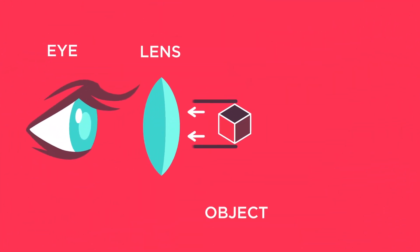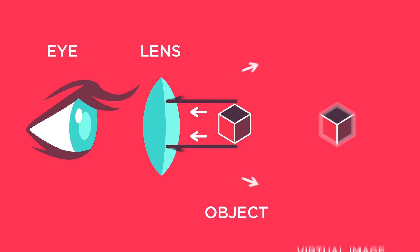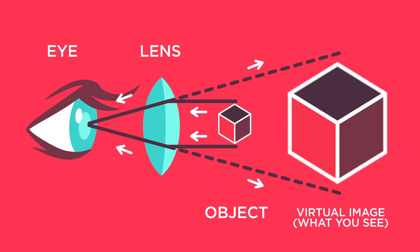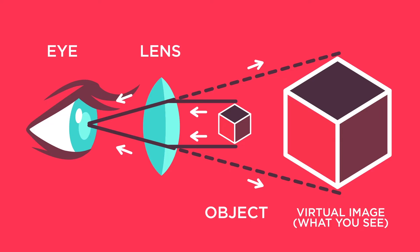As light travels from the object through a lens, it is bent or refracted and the image appears stretched. The stretched light falls on a sensor — either your eye or a camera — and that's where the virtual image forms.